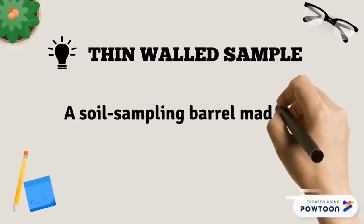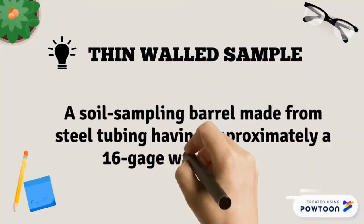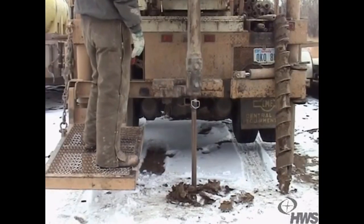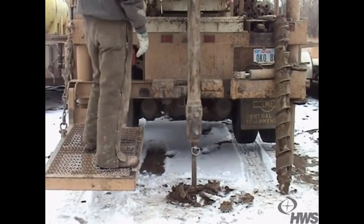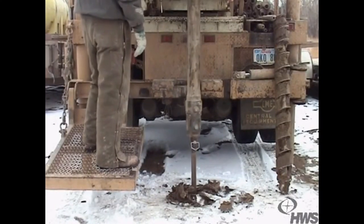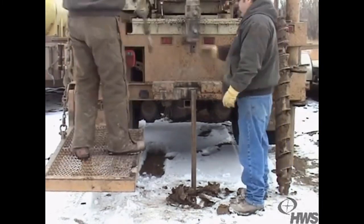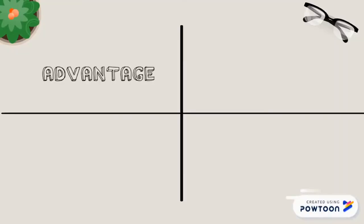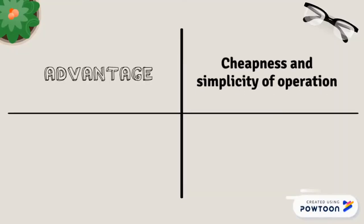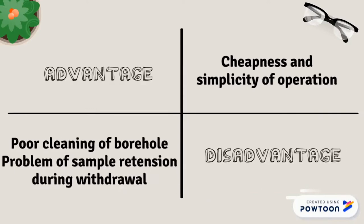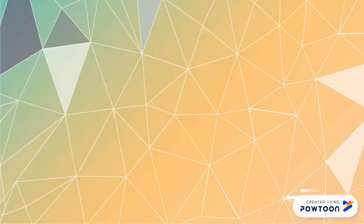The thin wall sampler is a soil sampling barrel made from steel tubing having approximately a 16-gauge wall thickness. The tube is pushed down into the soil and after driving the sharpened thin-walled tube, the sampler is rotated and taken out of the hole. The advantage is cheapness and simplicity of operation. However, the disadvantages are poor cleaning of the borehole and problems of sample retention during withdrawal.